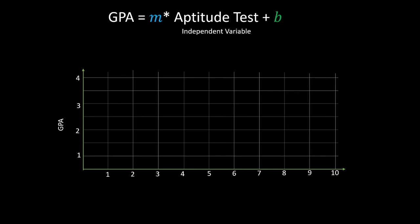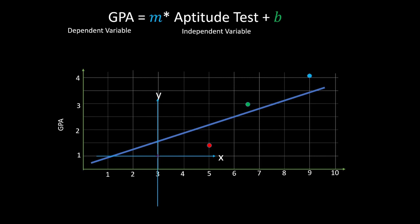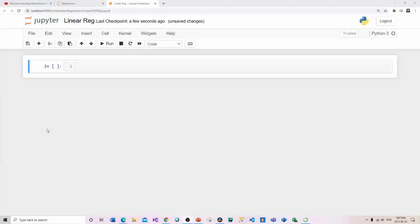Everything on the right side of the equals sign is known as the independent variables — the things that can change. Everything on the left side is the dependent variable. To be clear, on an x-y axis, m becomes the slope of the line and b becomes the y intercept. You'll see when we get into the code that m becomes our regression coefficient and b becomes our regression intercept.